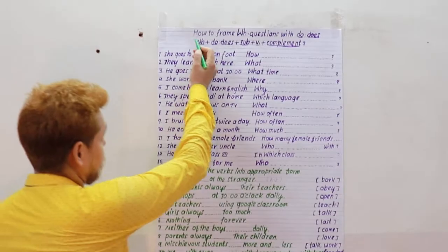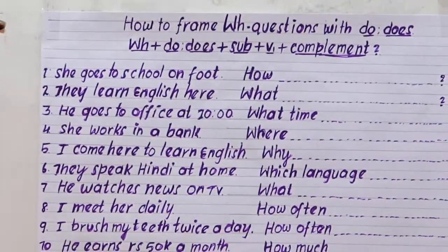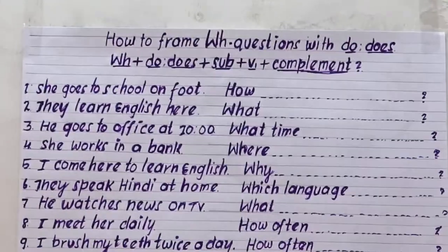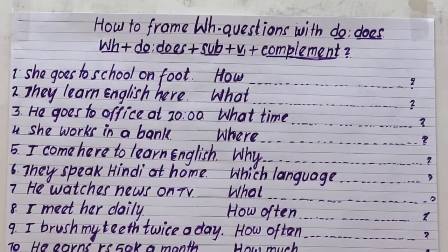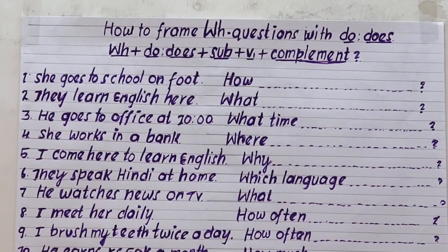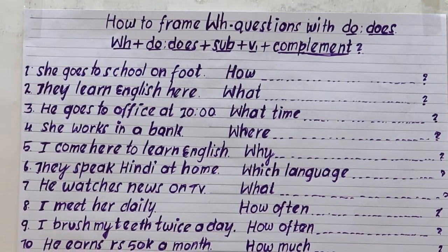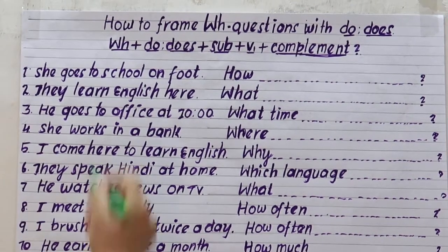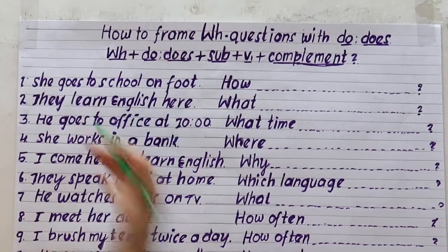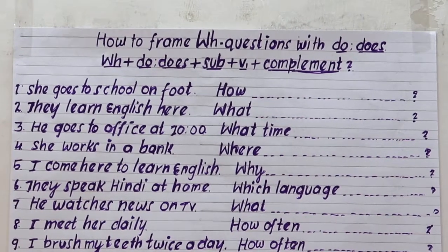The heading is clear: how to frame — means how to make WH questions with do and does. So do, does, present simple. Now what do you have to do? Question.